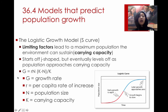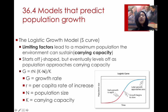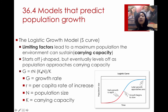The logistic growth model is predicted by: G equals r times n, times the extra factor (k minus n) divided by k. G, r, and n are the same as the previous model, and k represents the carrying capacity. When n is very small at the beginning of the curve, (k minus n)/k effectively equals 1, so you have what looks exactly like the exponential growth model G = rn. But as n grows and approaches k, if n equals k, then k minus k equals 0, and overall growth equals 0 — so there is zero growth.